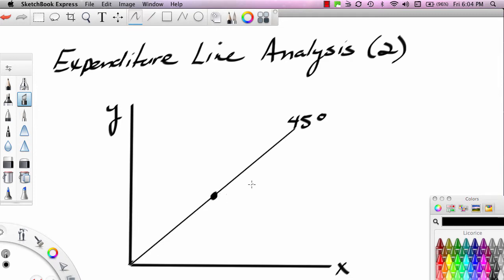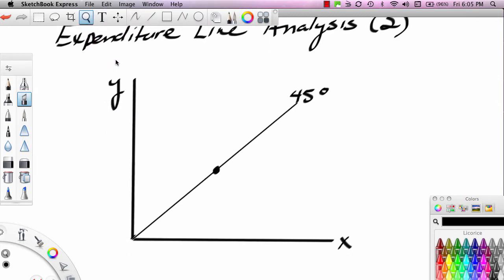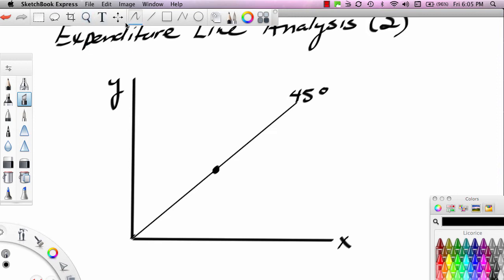When you're at a point on the 45-degree line, the x variable, whatever it is, is equal to the y variable, whatever it is. Now, I am assuming that we're using the same measuring stick on each axis. So let's say that x is measuring dollars and y is measuring dollars. So we're using the same measuring stick on both the vertical and horizontal axis.